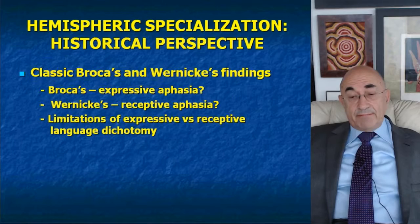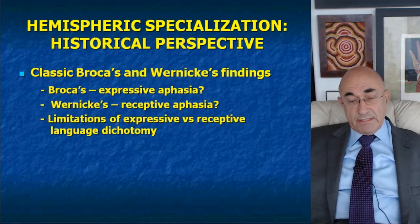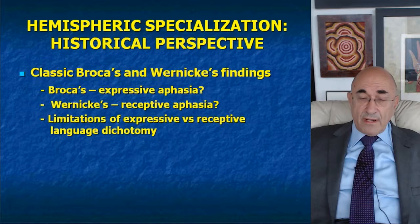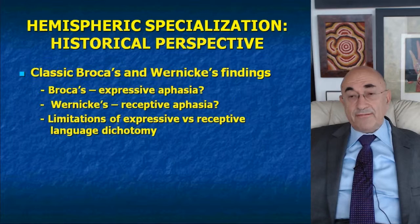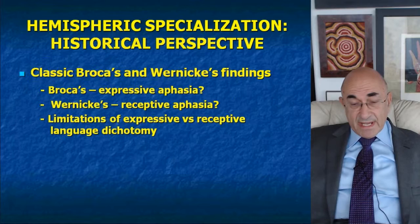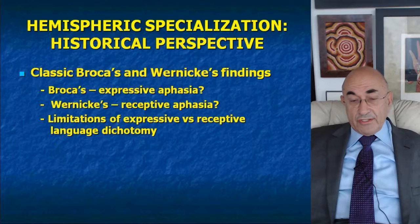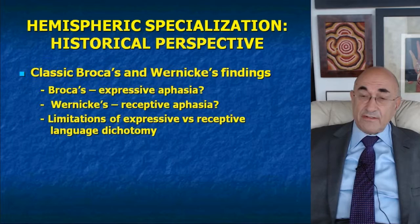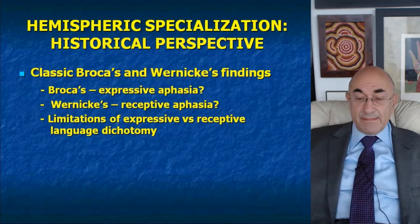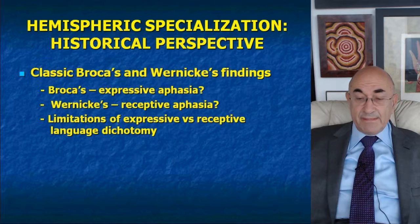The classic findings by Broca and Wernicke: sometime in the middle of the 19th century, the French neurologist Broca described a case with a focal lesion in the posterior portion of the frontal lobe, and claimed that as a result of this lesion, the patient lost capacity for expressive language, whereas receptive language remained intact. Somewhat later — about 10 to 20 years later — the German neurologist Wernicke came up with a complementary finding: a lesion in the posterior portion of the left temporal lobe resulted in an aphasia characterized by a deficit of receptive language, whereby expressive language remained intact. This led to the distinction between expressive and receptive language.